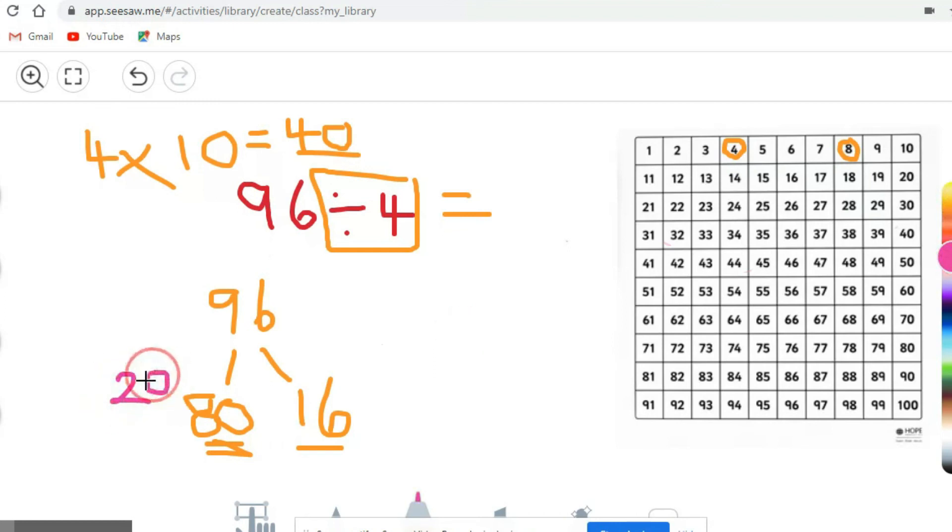And how many 4s are in 16? Let's count: 4, 8, 12, 16. How many groups of 4 have I circled? 4. Now I can do 20 add 4 is 24.